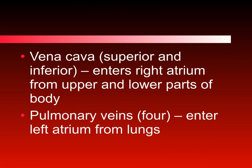Both vena cavas enter the right atrium. There are four pulmonary veins — two on the left and two on the right — and they receive blood from the left and right lungs, entering the left atrium. Because the blood entering the right atrium through the vena cava came from the rest of the body, it carries blood low in oxygen. The pulmonary veins' blood came from the lungs, so they are highly oxygenated.